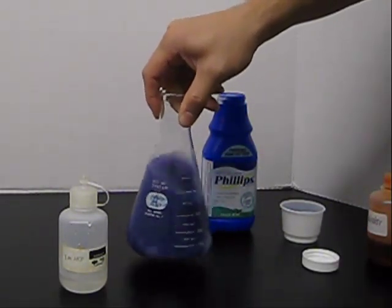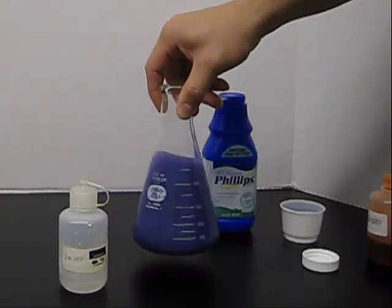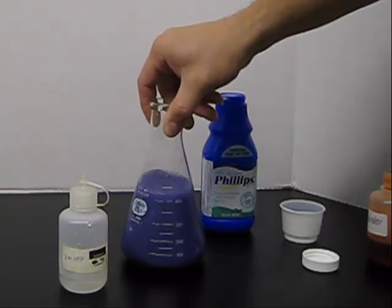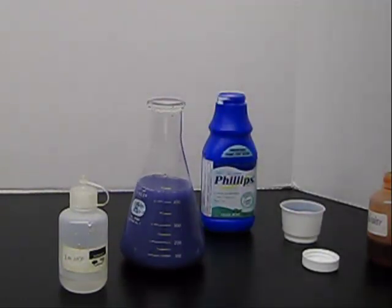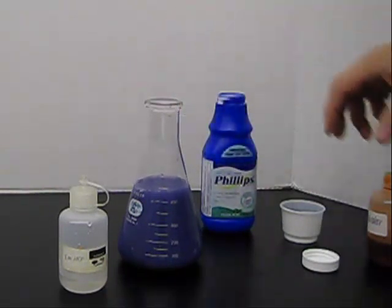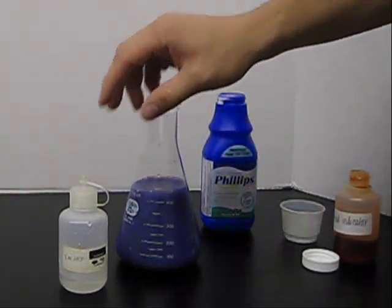And we are just going to stir it. And stirring it will get everything mixed up, and you will see that it is cloudy and that is some milk of magnesia that has not dissolved yet. And the blue color is because it is a base.